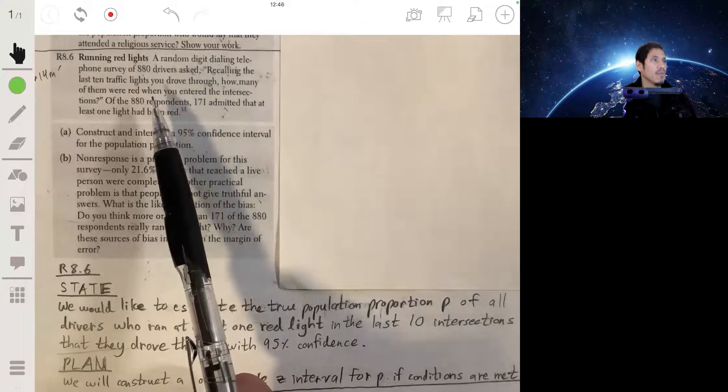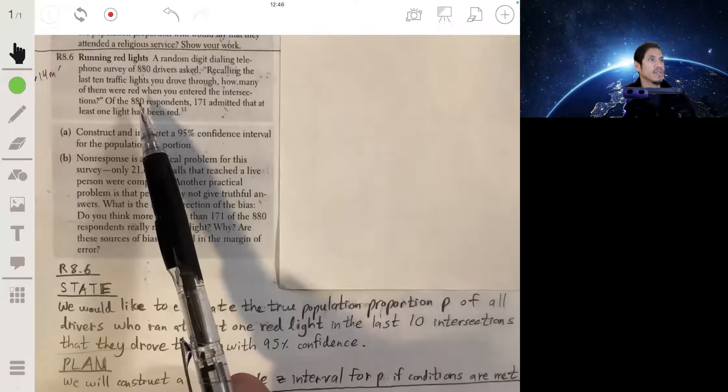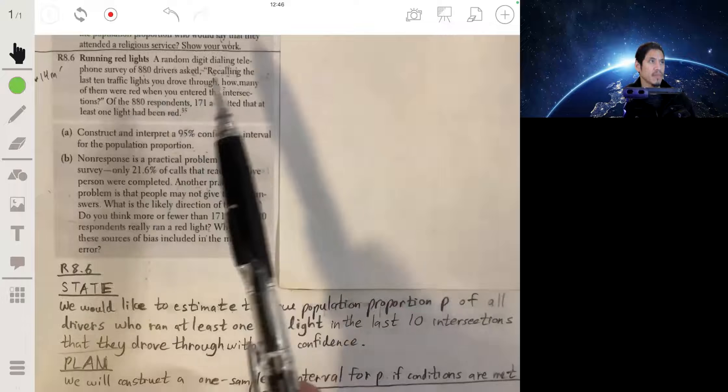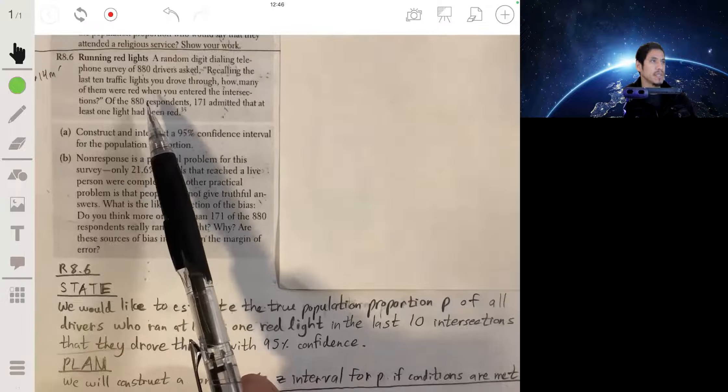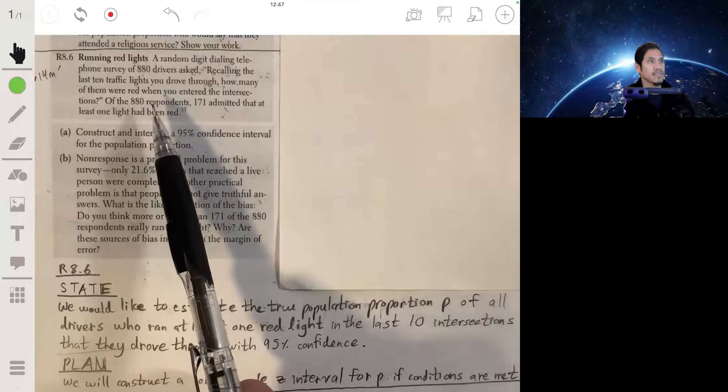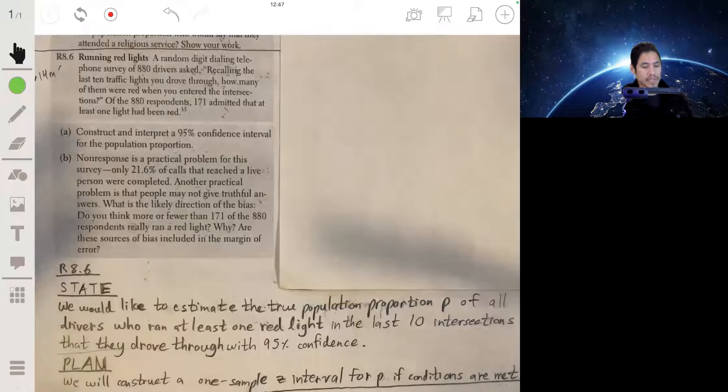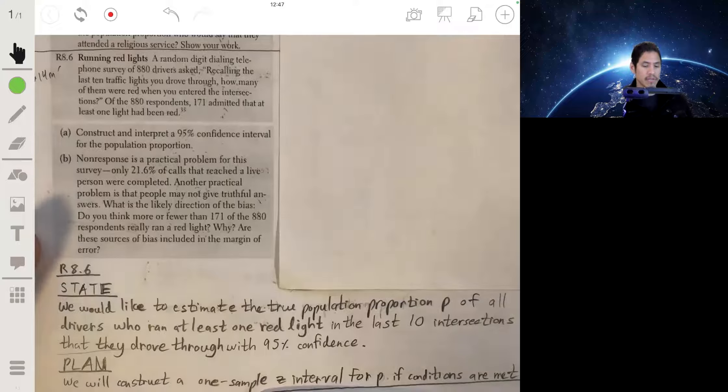10 percent means that we basically are saying that 880 is no more than 10 percent of all the drivers in the population. 880 times 10 is 8800, so we can say that there's at least 8800 drivers in the population, which is fair, which is true, so we can say that is met.